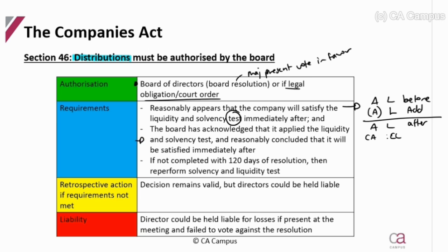The board must actually write somewhere in the resolution that they have applied the liquidity and solvency test and reasonably conclude they will satisfy it. If the distribution is not completed within 120 days of the resolution, they have to redo the liquidity and solvency assessment.